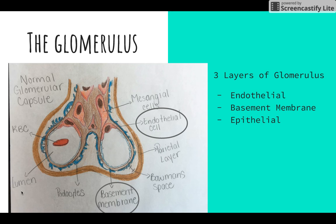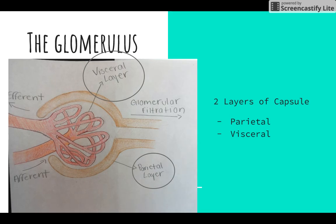These cells attach to the basement membrane by podocytes — long foot-like processes — and the openings between these foot processes are the filtration slits where filtrate can enter the capsular space. Here is a photo of the two layers of the capsule: the parietal layer and the visceral layer.